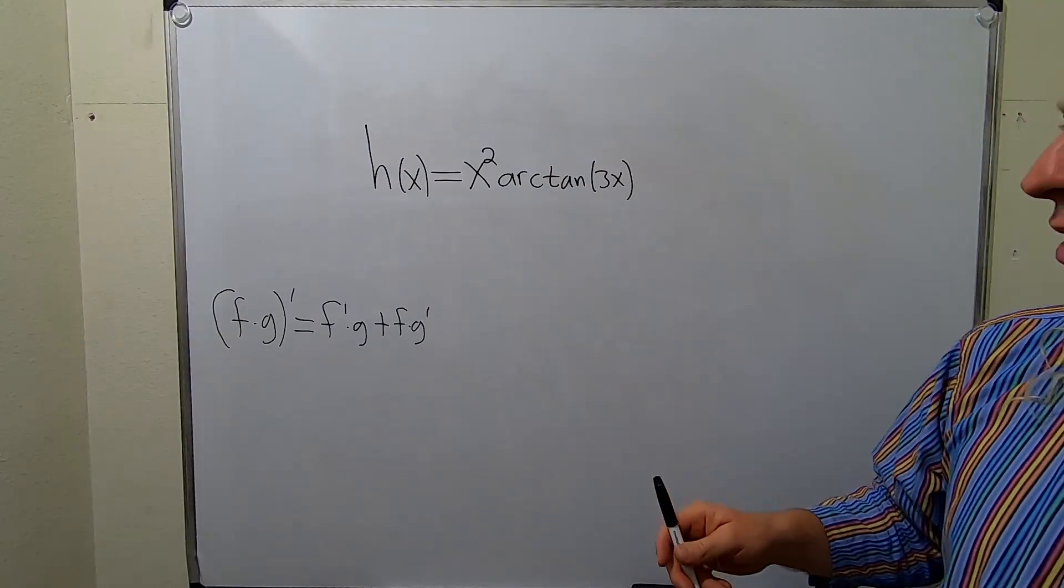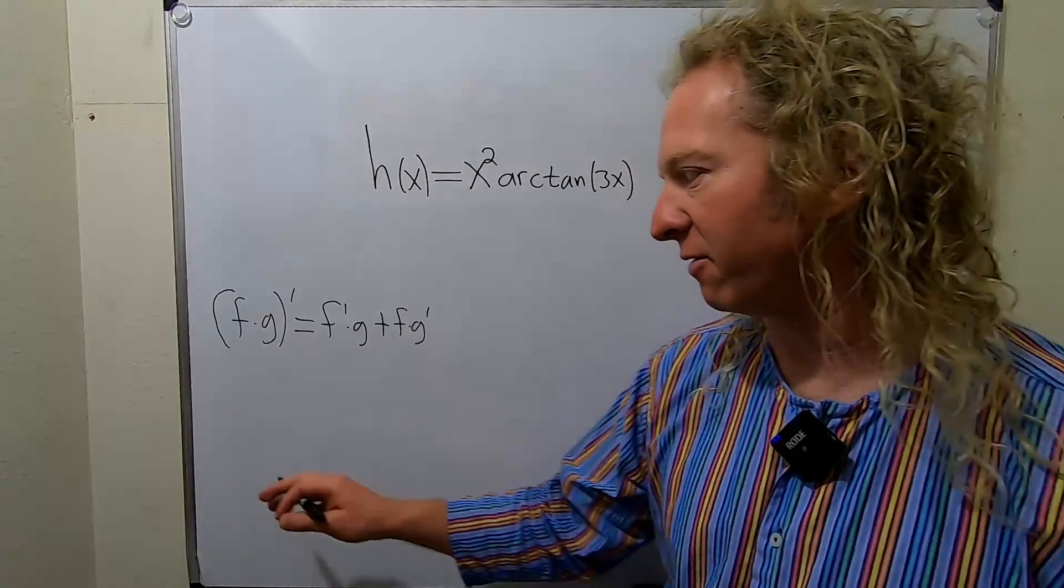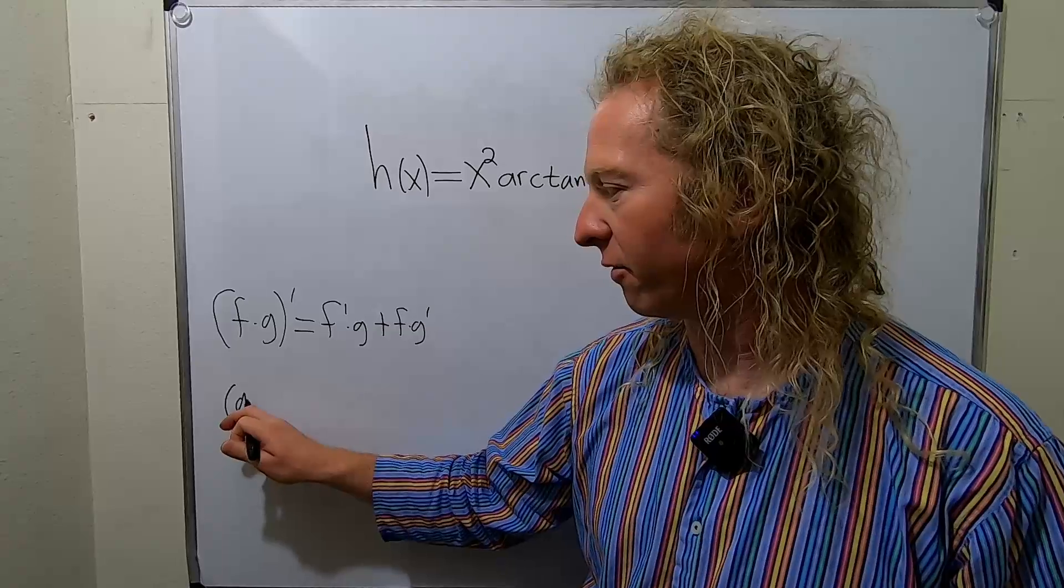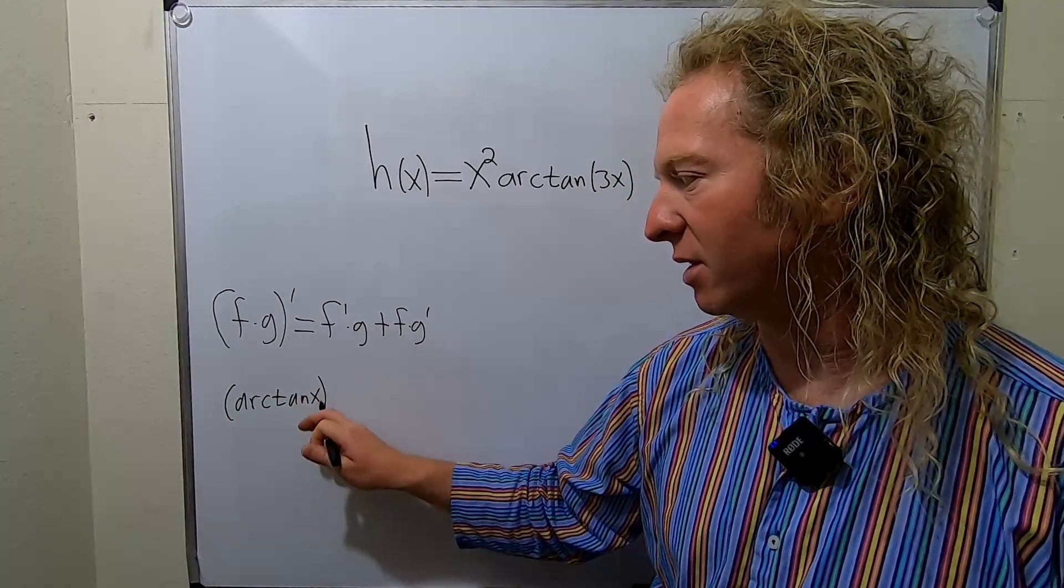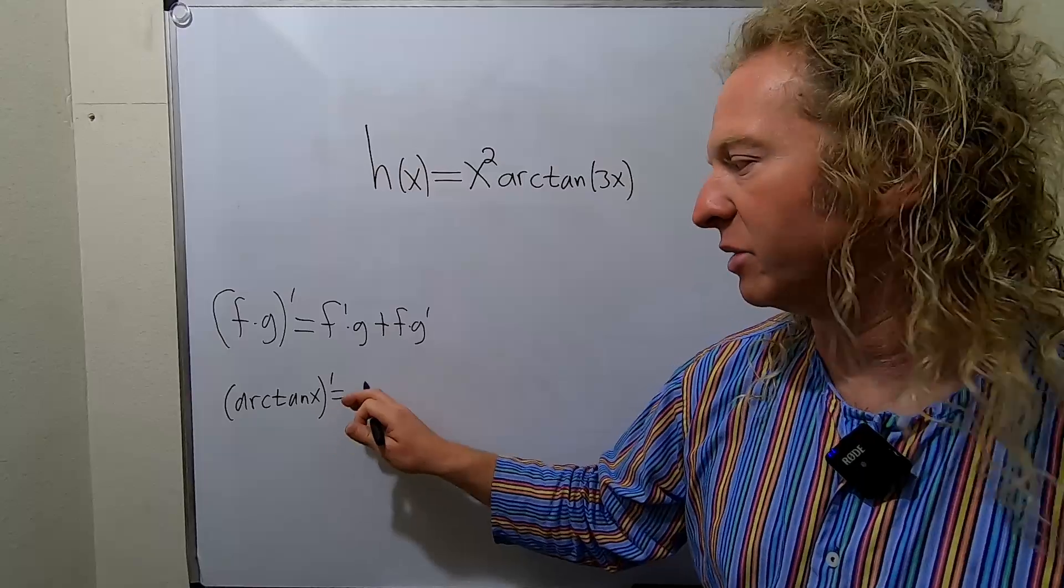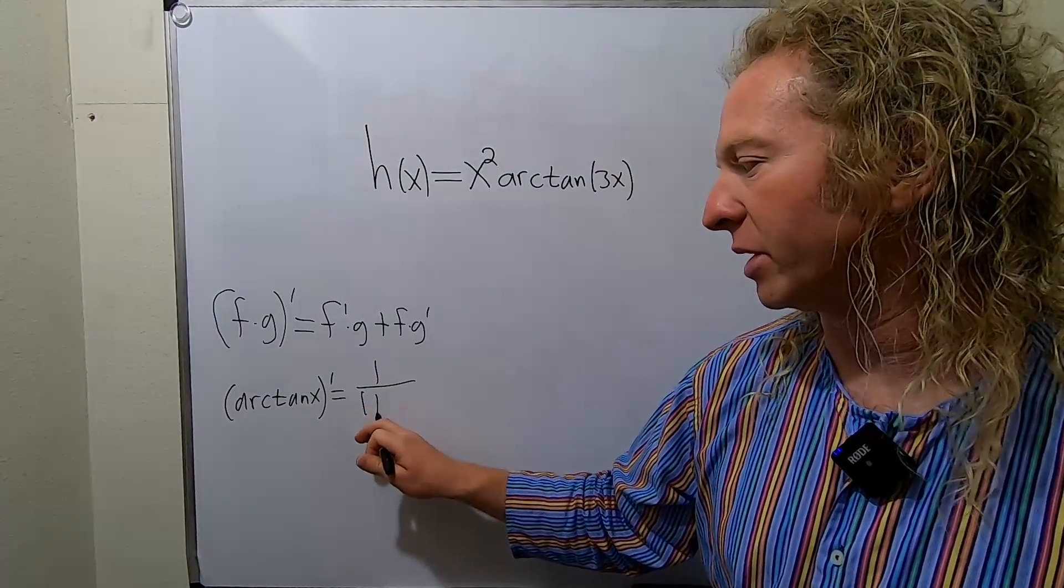The next thing we need is the formula for the derivative of the arctan function. So if we have arctangent of x and we want to take the derivative, the formula is 1 over 1 plus x squared.